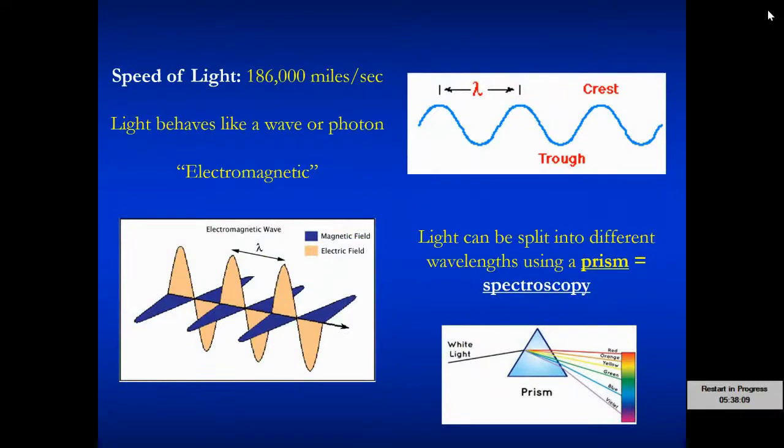First off, there is a speed limit to the universe, and that is the speed of light, 186,000 miles per second. Light behaves like a wave or a photon, so it's got a particle wave duality, where a photon is like an energy bullet passing through space. We can look at light in that manner, or as a wave.